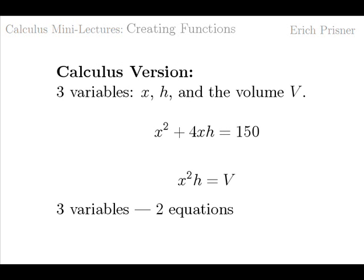In the calculus version, the volume is not known, therefore it must be a variable. Overall we have three variables, x, h and the volume V. But we still only have two equations. x squared plus 4xh equals 150 and x squared h equals V.